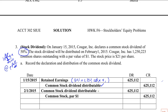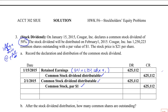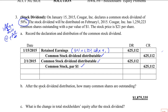On the distribution date — and we call it a distribution date, not a payment date — we remove the distributable, and this is when the stock is increased. How many common shares are outstanding? They started with 1,250,223, and they added 50% times the outstanding.